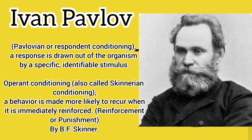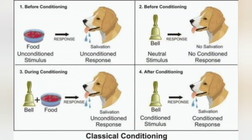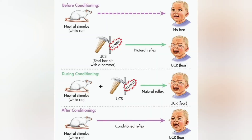In Pavlov's example, the unconditioned stimulus is the sight or smell of food, and the unconditioned response is the dog's natural salivation in response to seeing or smelling food. The conditioned stimulus is the ringing of a bell, which previously had no association with food. The conditioned response is the salivation of the dog in response to the ringing of the bell, even without the presence of food.